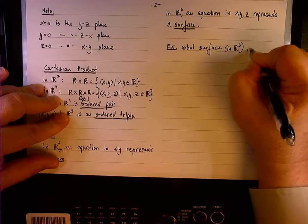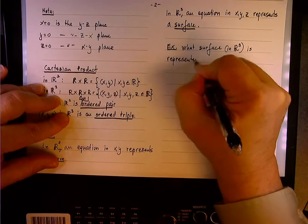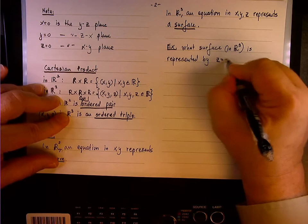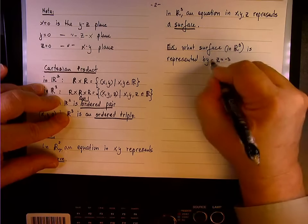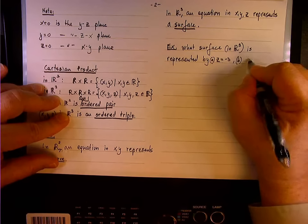Is represented by z equals negative 3, that will be A, and B will be, let's do x equals pi.